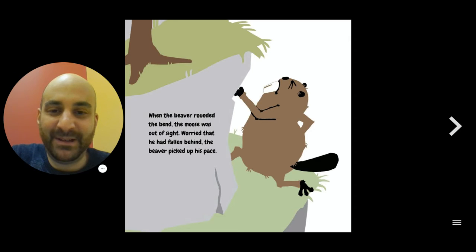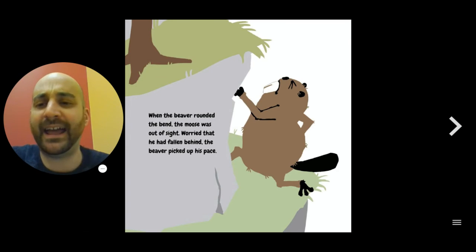When the beaver rounded the bend, the moose was out of sight. Worried that he had fallen behind, the beaver picked up his pace. So the beaver thinks the moose is so far ahead. But we know that the moose actually jumped off the cliff.